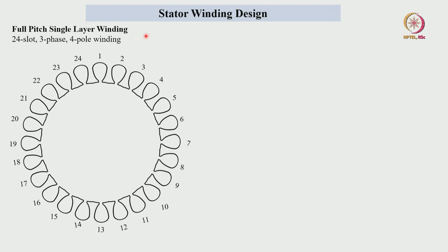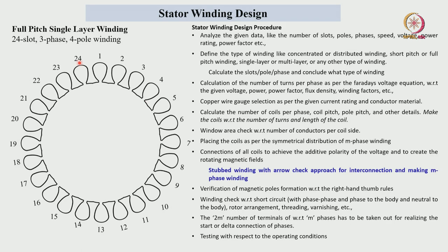Let us consider a 24-slot, 3-phase, 4-pole winding. In a 24-slot stator core frame, the slots are marked 1 to 24, and the winding design procedure will be the same for any type of machine. First we have to analyze the given data: how many slots, how many phases, and what is the number of poles. Then we calculate the pole pitch, coil pitch, and related parameters.